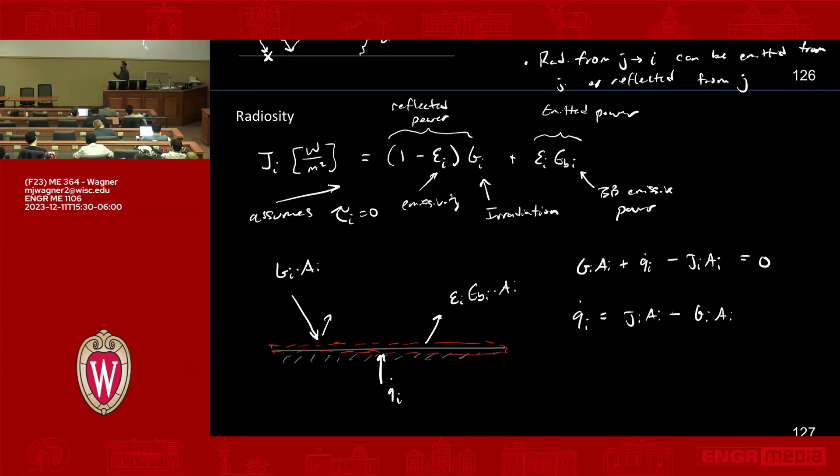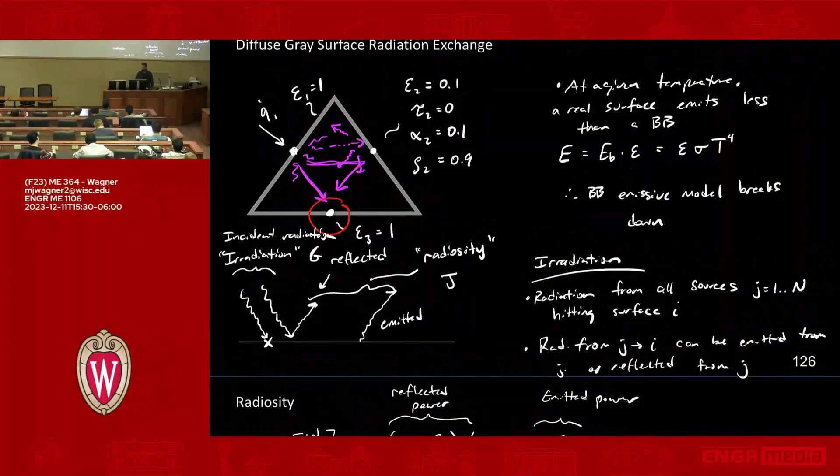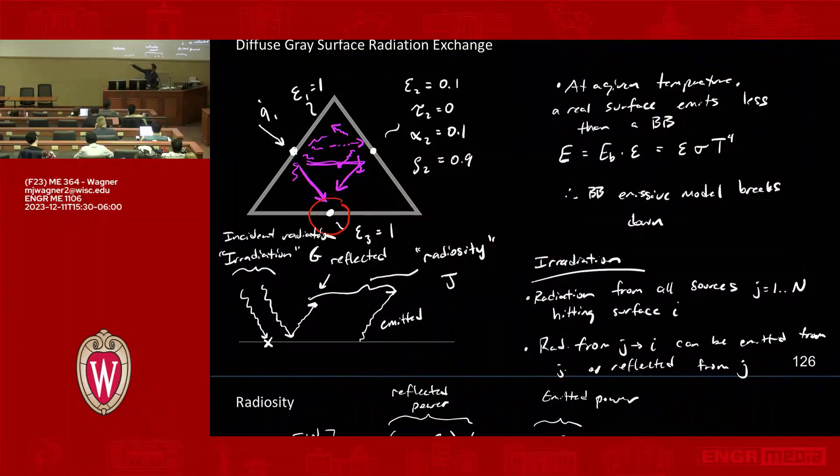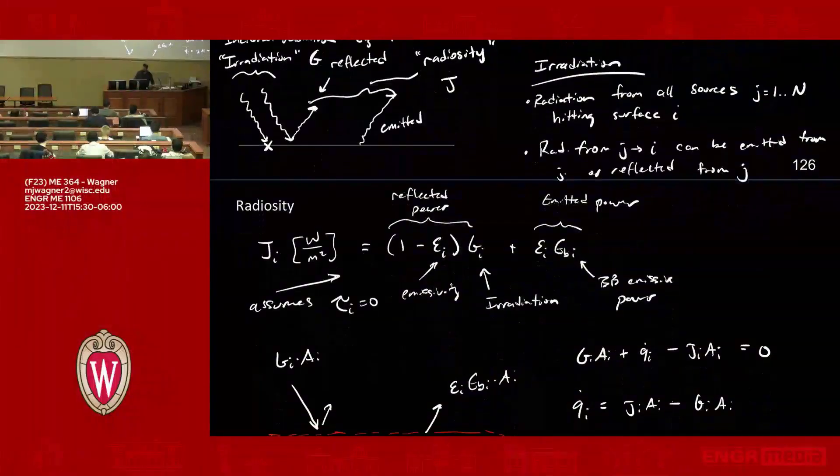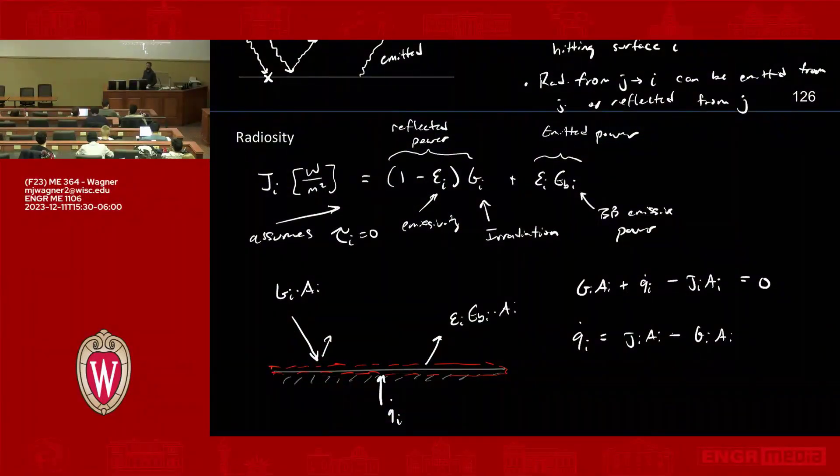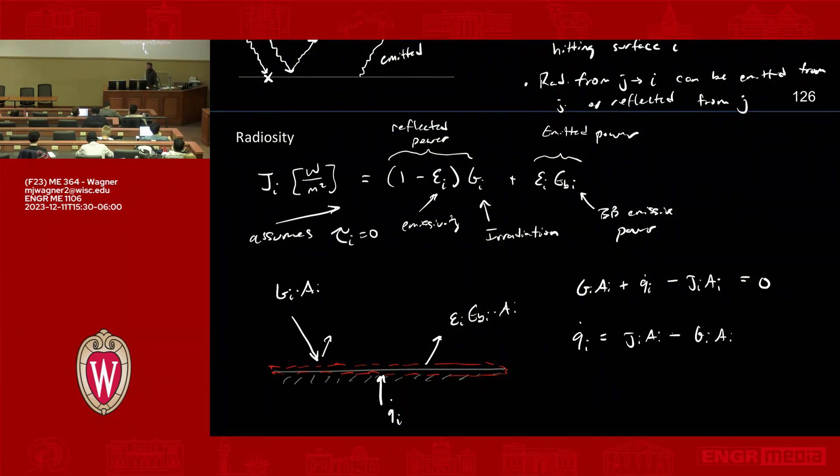So this is like the heat transfer through that node. It's sort of entering into the radiation problem or leaving the radiation problem. That's what's being captured down here. So we're going to use this. We're going to manipulate it a little bit and hopefully find a way to express this in terms of stuff that we actually know about the problem.